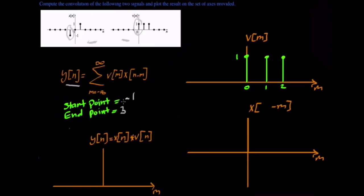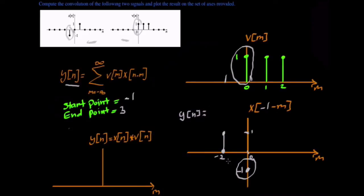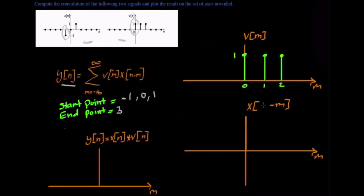So the first point, which is shifting by negative one — after shifting x of negative one minus m — the new points will be at point negative one with an amplitude of one, and at point zero we will have an amplitude of negative one. To get y of n, we see if there is an overlap at each point. The only overlap we see is at point zero. In v of m we have one, and in x of negative one minus m we have negative one. We multiply those together, we get negative one.